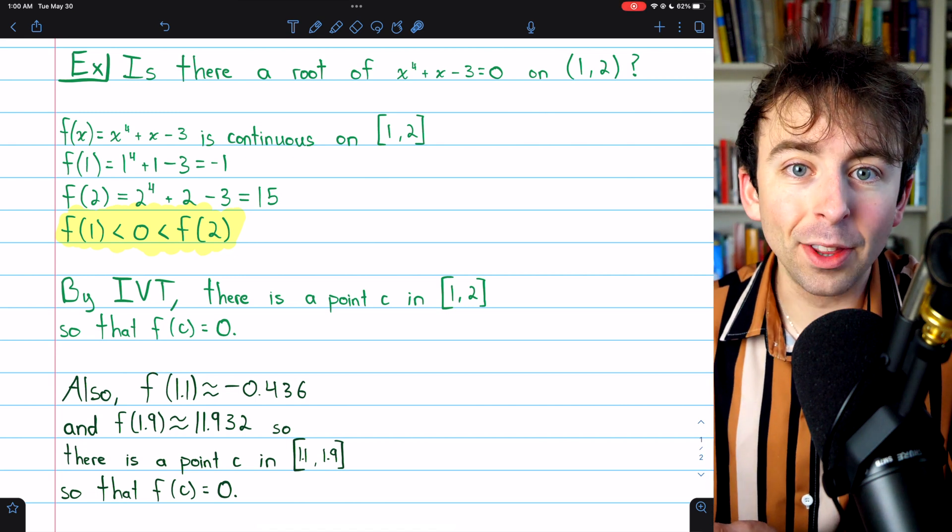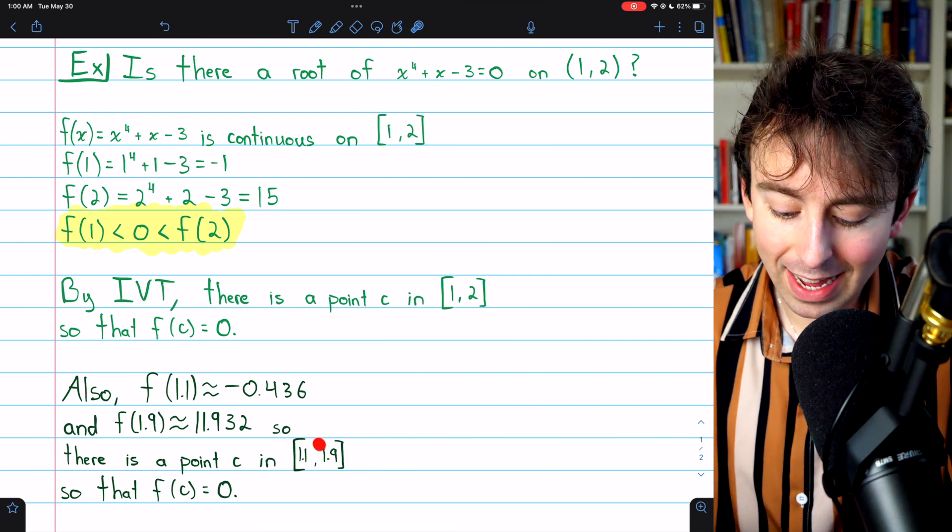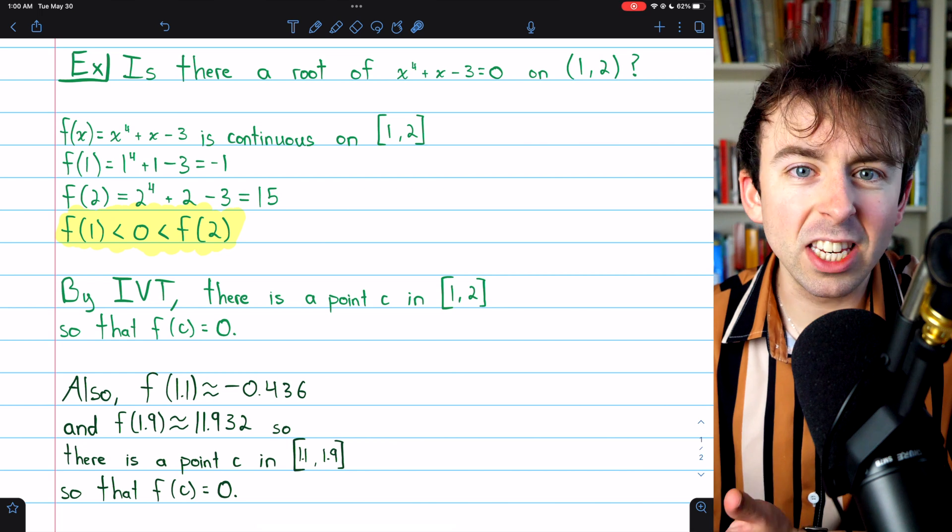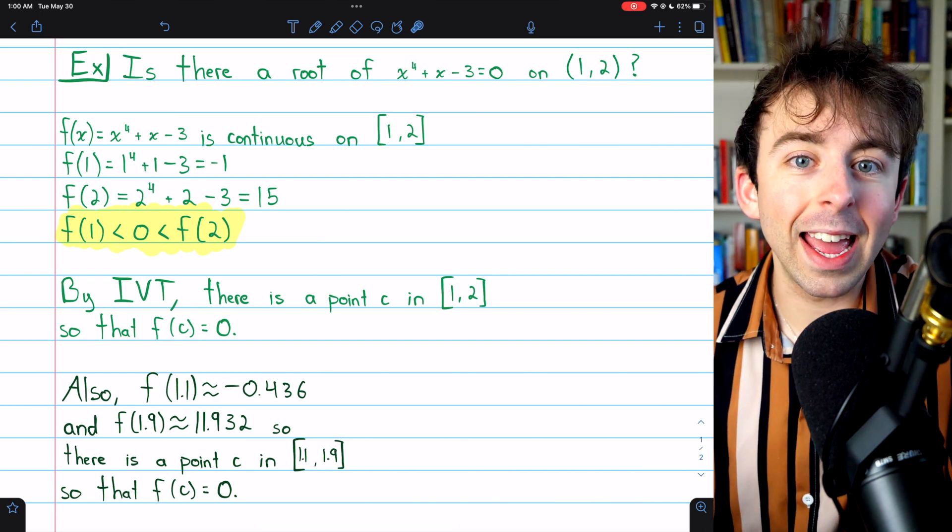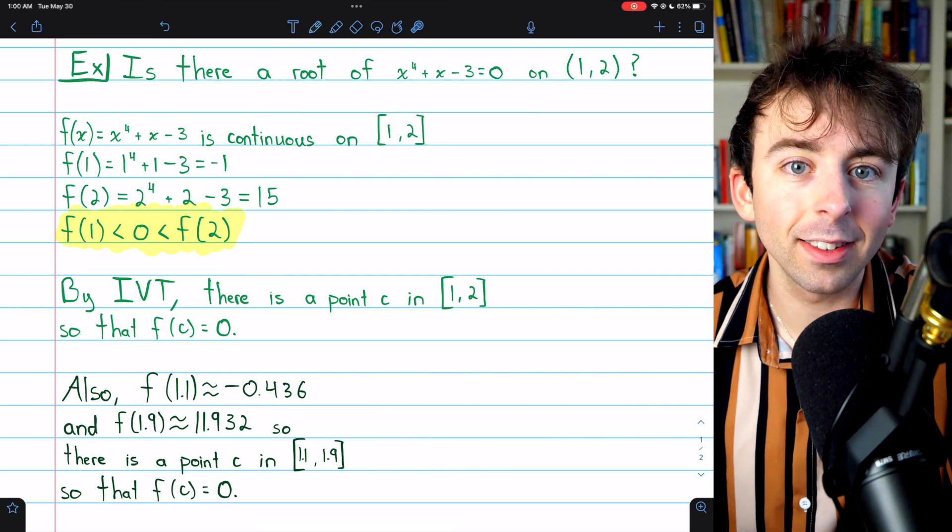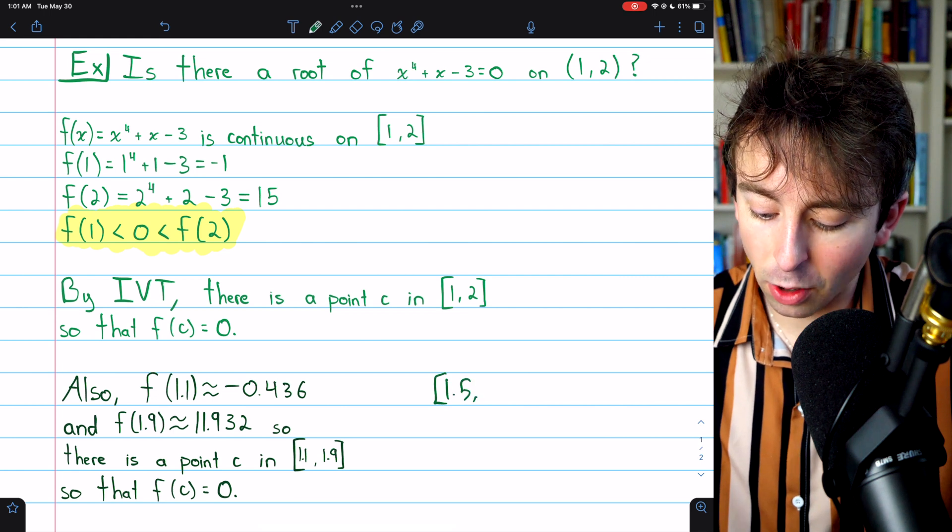Now, it could be that there are multiple roots, but for sure there has to be at least one on this closed interval. We could proceed in this way, continually guessing and checking and shrinking the interval to try to get a closer and closer sense of exactly what the root is.